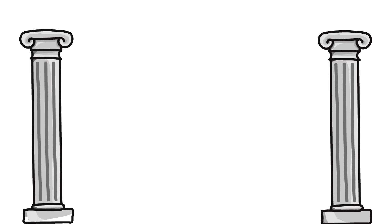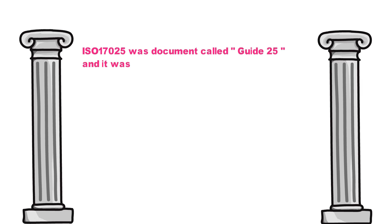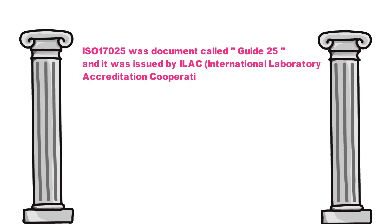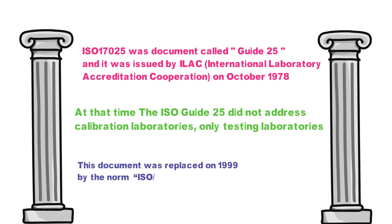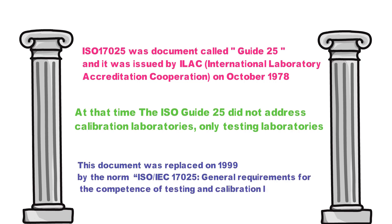ISO 17025 was a document called Guide 25 and it was issued by ILAC, International Laboratory Accreditation Corporation, on October 1978. At that time, the ISO Guide 25 did not address calibration laboratories, but only testing laboratories. This document was replaced in 1999 by the norm ISO IEC 17025, General Requirements for the Competence of Testing and Calibration Laboratories.